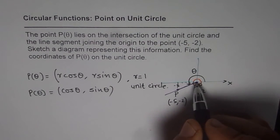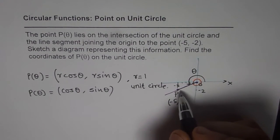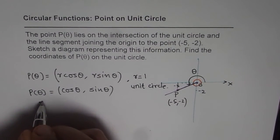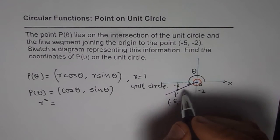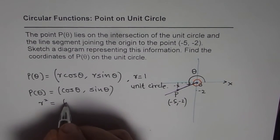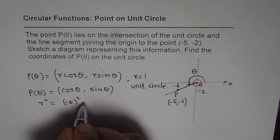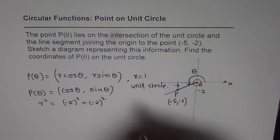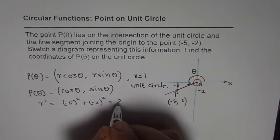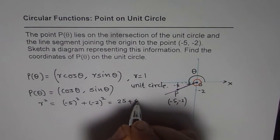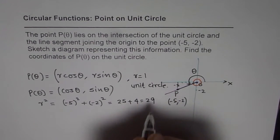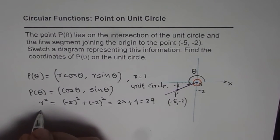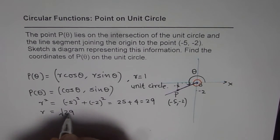We need to find this side length, the hypotenuse. So we can find it as r² equals to (-5)² plus (-2)². So this is 25 plus 4 which is 29. So we have r² is 29 and r will be equal to √29.